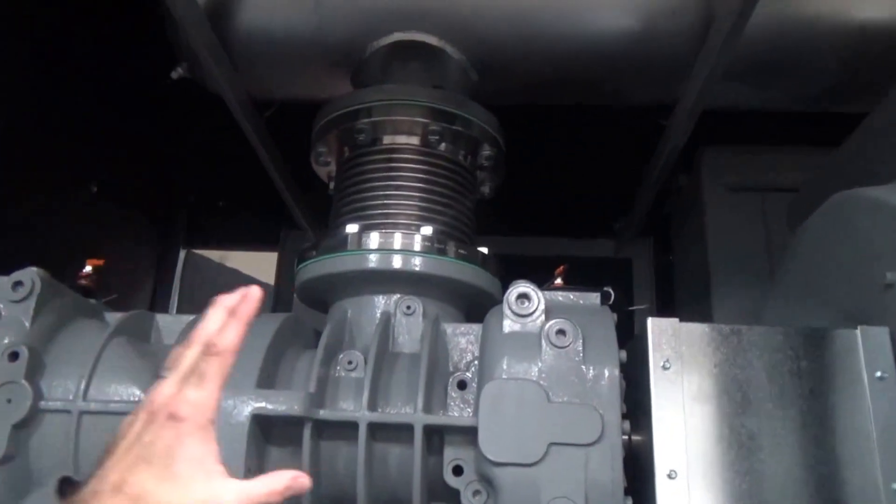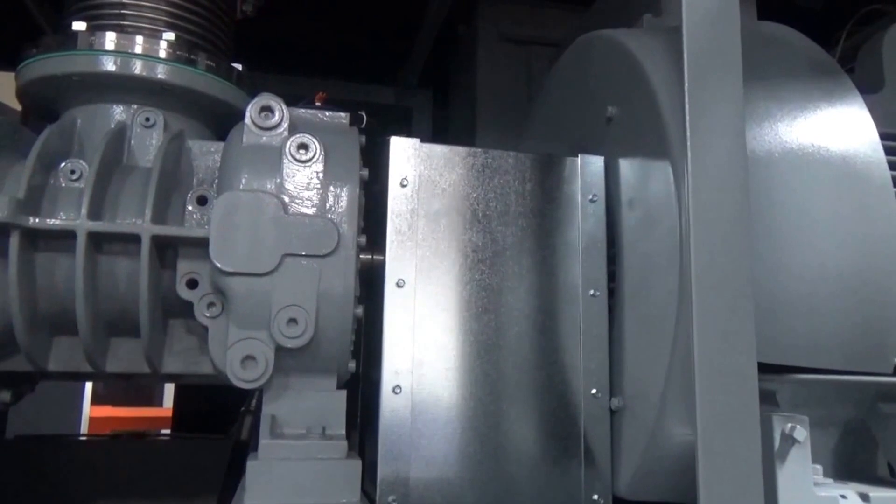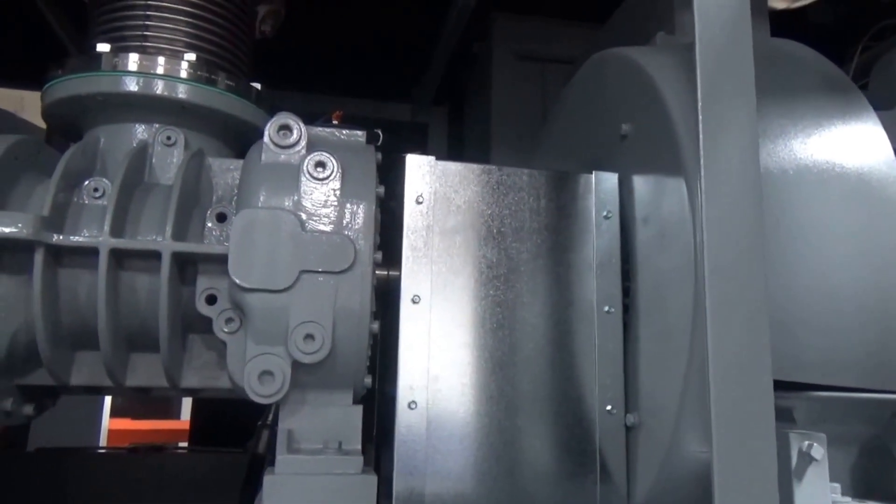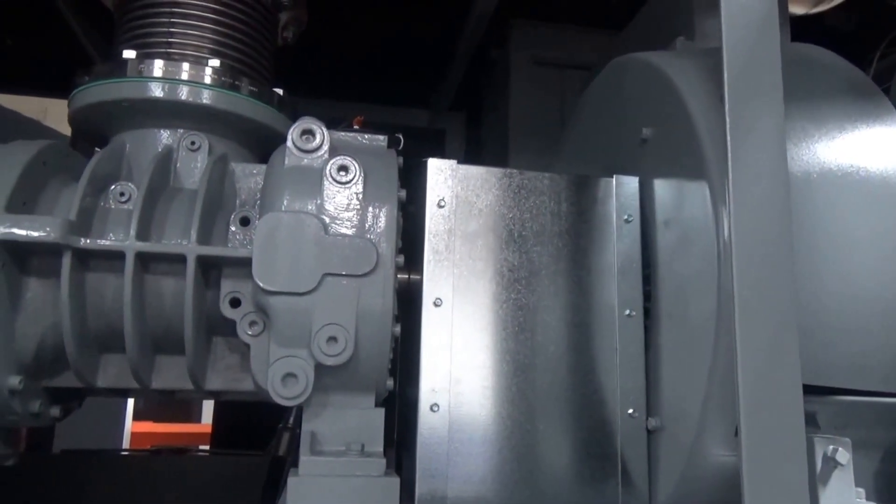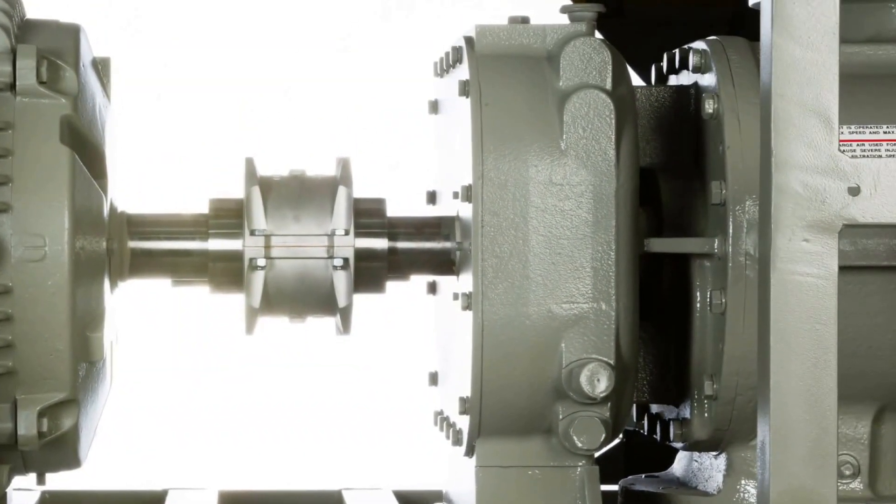The blower is coupled directly with a Baldor 350 horsepower, 4160 volt motor. Direct drive coupling eliminates any belt losses. It allows you to put the blower on a VFD, ramp it up, ramp it down to whatever your process needs.